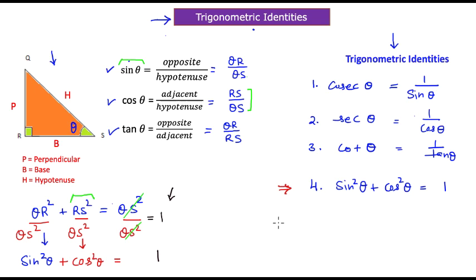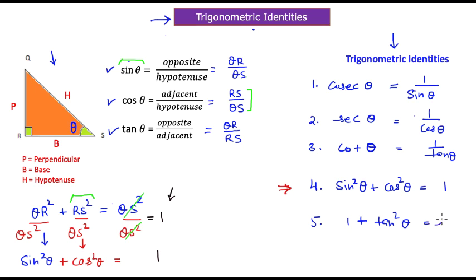Now the fifth identity: if you take the square of tangent theta and add one, the result equals sec²θ.